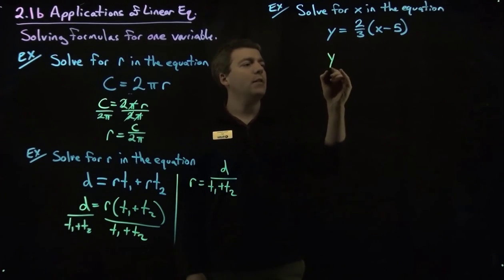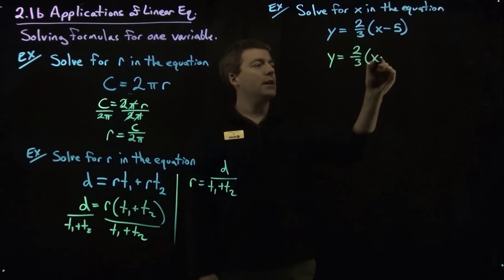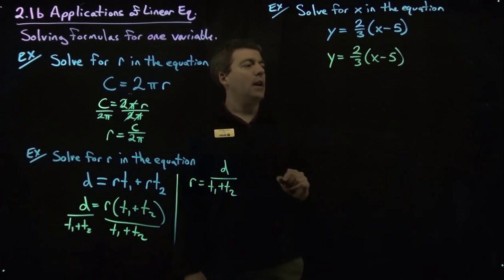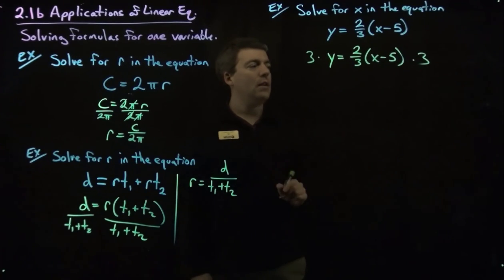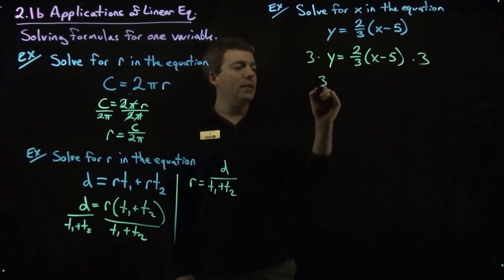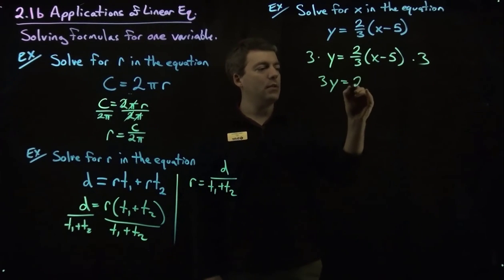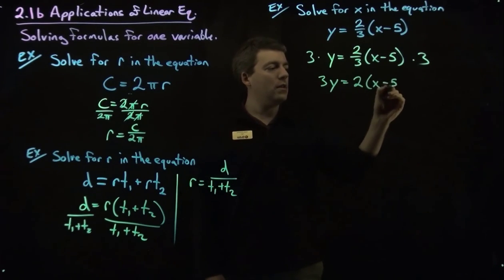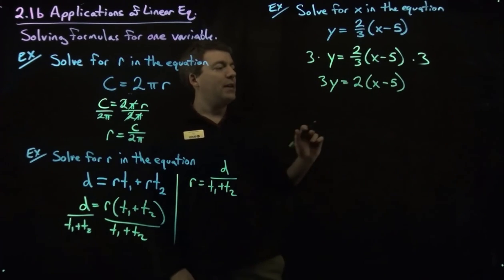So let me write down the equation again. y equals 2 thirds x minus 5. And now we're going to multiply both sides by 3. 3y on the left-hand side. 3 times 2 thirds is 2. Now no fractions. Much better.